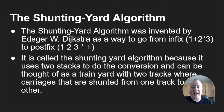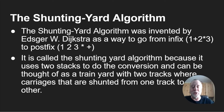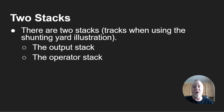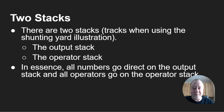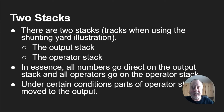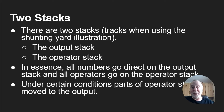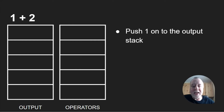It's called the shunting yard algorithm because it uses two stacks to do the conversion, and can be thought of as a train yard where there are two tracks. The numbers and symbols are shunted from one track to another. The two stacks are the output stack and the operator stack. All numbers go directly to the output stack, operators go onto the operator stack, and under certain conditions things from the operator stack are also moved onto the output stack.